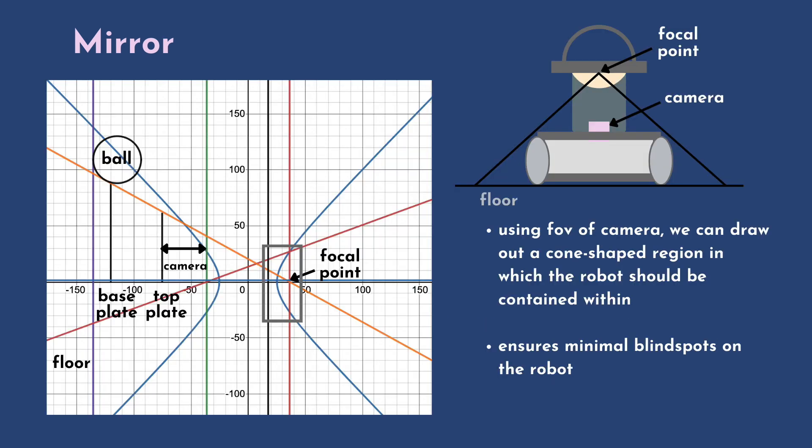To ensure that the camera's vision is not blocked by any parts of the robot, we needed to make the mirror such that no part of the robot can be seen. We did this by finding the focal point of the mirror and drawing the rays out based on our camera's FOV. This creates a cone shape with our robot contained within the conical region to ensure minimal blind spots to the robot.